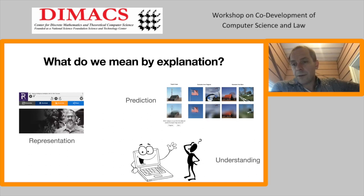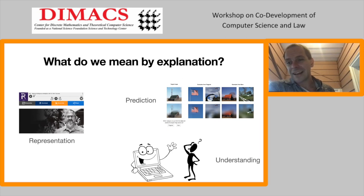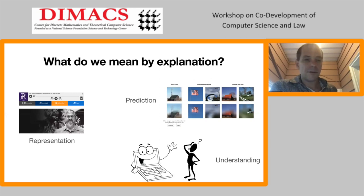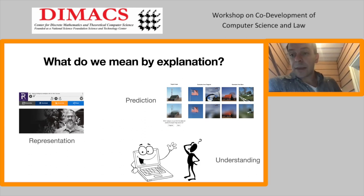Clearly if we want to have explainable AI, we've used the word — but what is an explanation? There's a huge philosophical literature tangling with this question. We're going to largely jettison that, not because it's not important, but in general when people say explainable AI, what they're hoping for is something that works. There are three general classes of things we might think of as explanations.